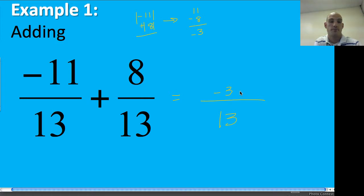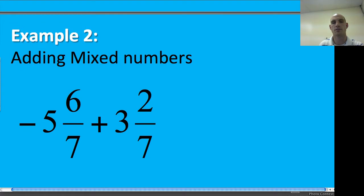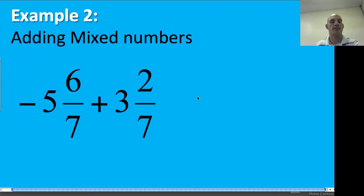Okay so that's the negative so I know that it's negative 3 thirteenths. That's all there is to it. Okay so that's basically how we go. We keep the bottoms and add or subtract the tops.